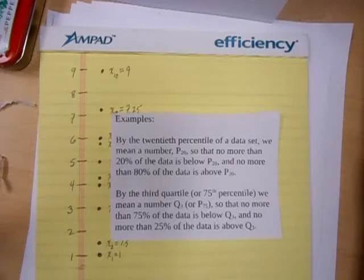below this number P20, and no more than 80% of the data is above P20. Sometimes we talk about quartiles. By the third quartile, that's the same thing as the 75th percentile, we mean a number Q3 or P75, so that no more than 75% of the data is below Q3 and no more than 25% of the data is above Q3.